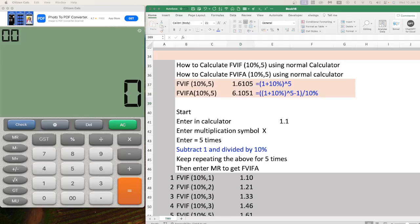Hello students, this session we will discuss how to calculate Future Value Interest Factor for 10%, 5 years and Future Value Annuity Factor for 10%, 5 years using a normal calculator.